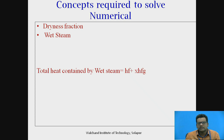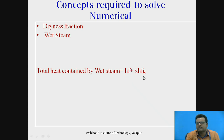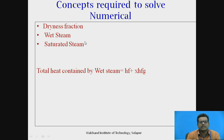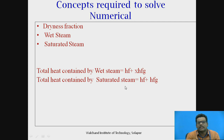For wet steam, the total heat contained per unit mass is equal to Hf plus X·Hfg, where Hf is the sensible heat content of the liquid, Hfg is the latent heat at the given pressure, and X is the dryness fraction (between 0 and 1). For saturated steam, the same formula applies but X equals 1, so the total heat per unit mass becomes Hf plus Hfg.